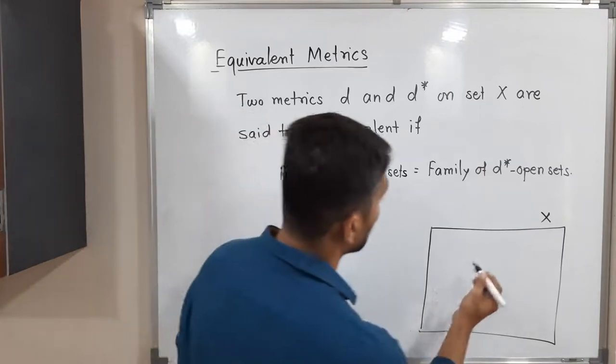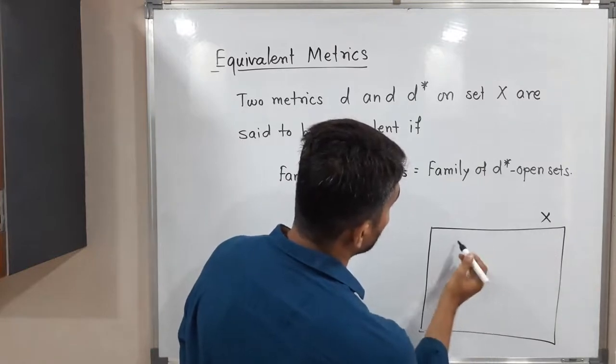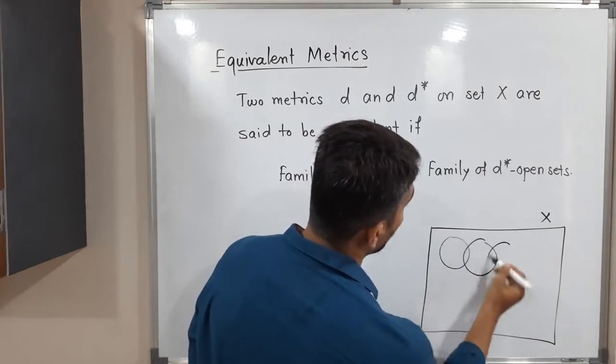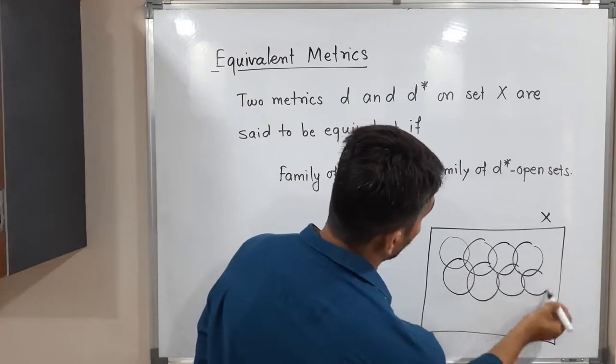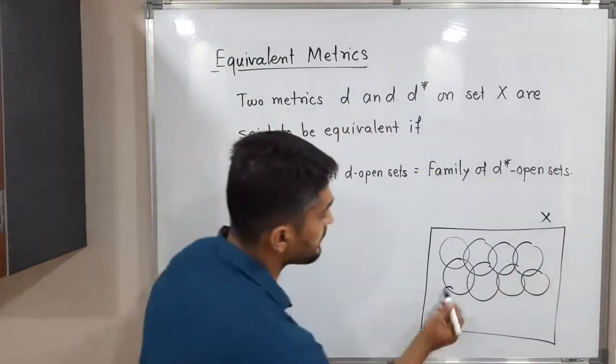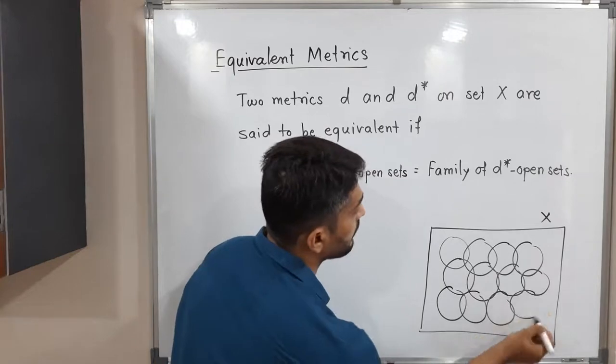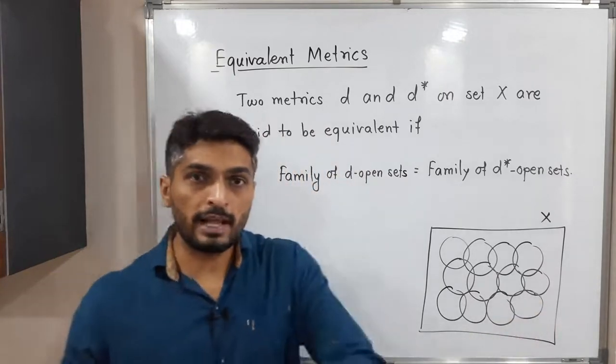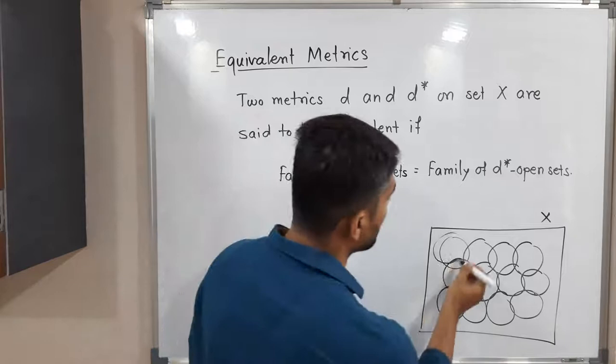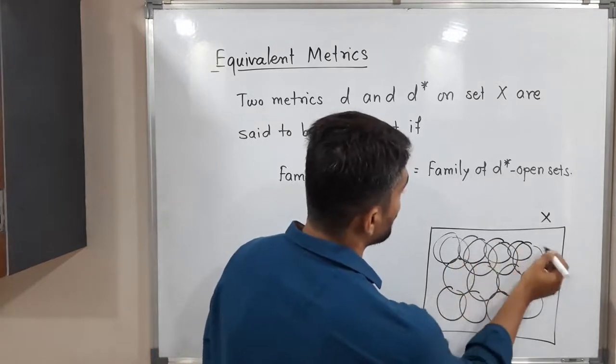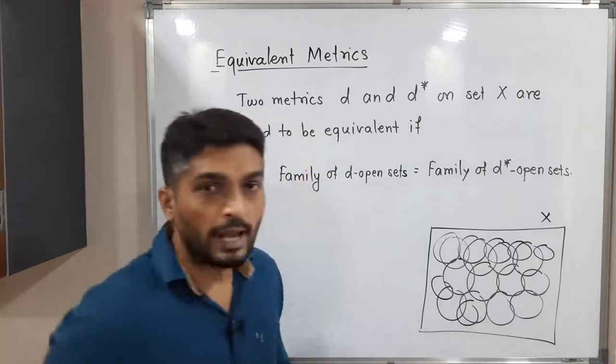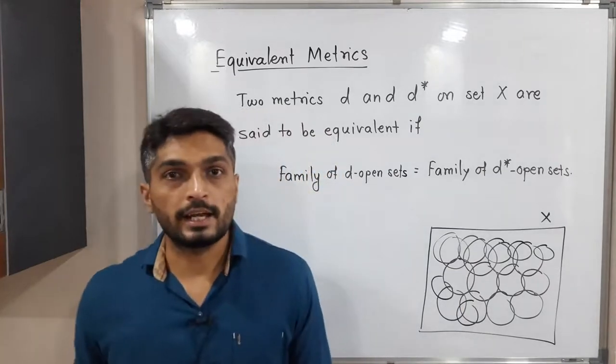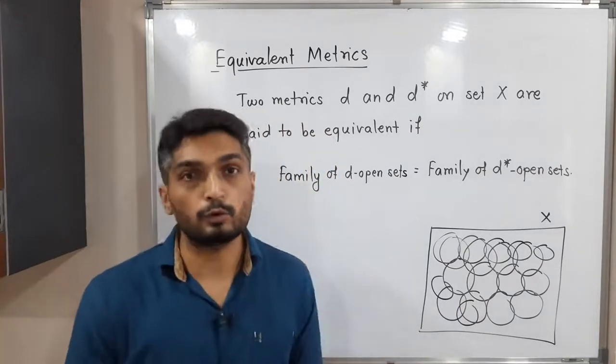So I will show you here. Suppose in metric space (X,D), we have these open sets. That means we call them D-open sets. And in metric space (X,D*), we will have some open sets. We call them D*-open sets. I am showing them here. So you can easily see, we have some family of D-open sets and we have some family of D*-open sets.